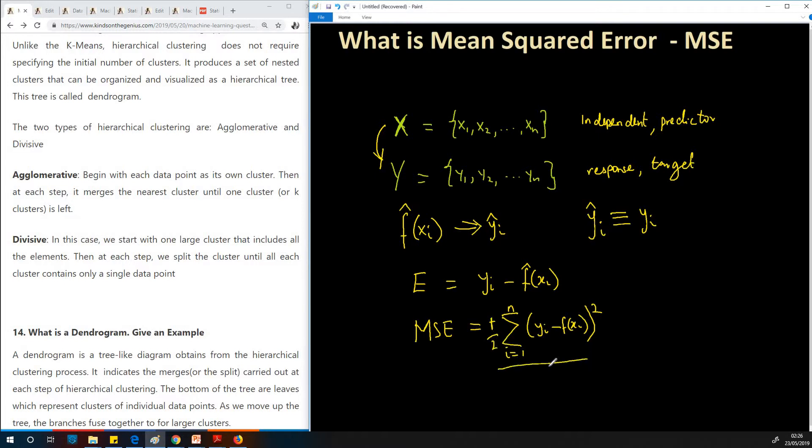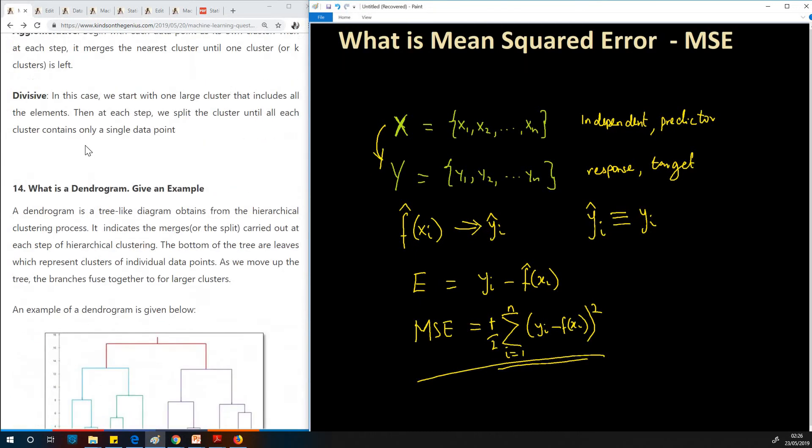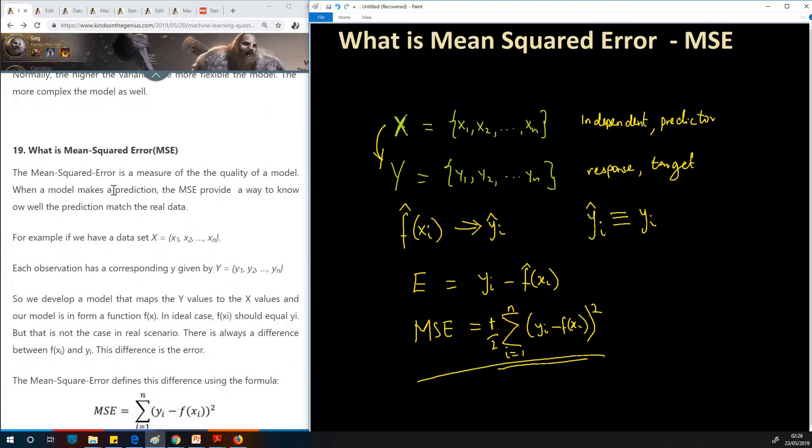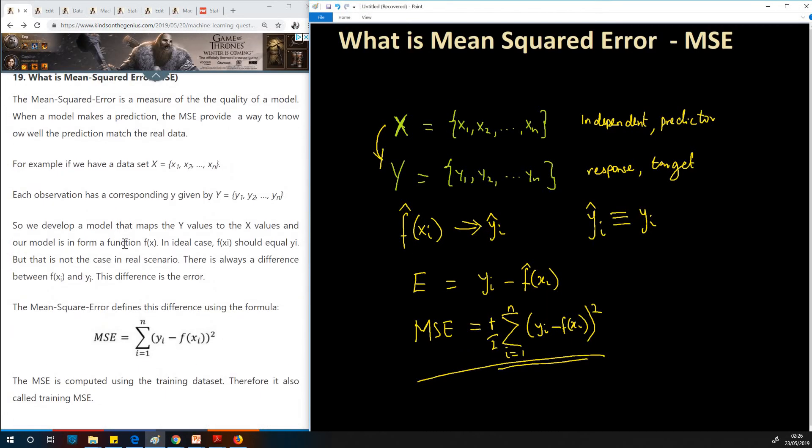This one over two factor is necessary since some textbooks sometimes don't include it, so we are all good to go. That is what mean squared error is all about. Again, I would like to say take some time to read it up. The explanation is here and also be able to write this formula all on your own without having to look at any textbook.